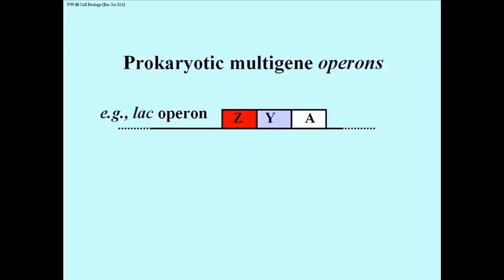Here we have a cartoon of the lac operon's genes that code for three enzymes involved in metabolizing lactose. This operon is transcribed as a single long mRNA encoding the three genes.